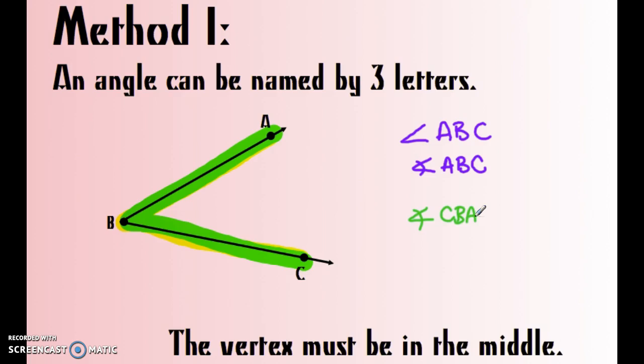If you try to do something like A, C, B, well that does not describe this angle, because A, C, B, kind of if you traced it, you go A, C, B, you can see it's not the right angle, so that's not correct.